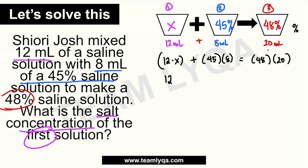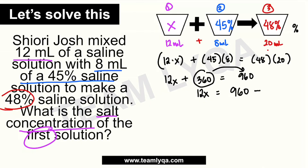I-solve natin ito ngayon. You have 12x plus 45 times 8. Dalawang 45 is 90, so apat na 90 na lang — you have 360. Equal siya sa 48 times 20. Ang 48 times 2 is 96, so times 20, that's 960. So iwan natin yung 12x dito para ma-iwan yung x sa isang side. Inilipat natin ito sa kabilang side — dahil positive siya dito, magiging negative siya — so this will be 960 minus 360. Now we have 12x is equal to 600. Divide natin both sides by 12 — ang x ay equal sa 600 divided by 12, or simply 50.